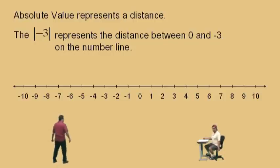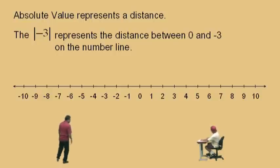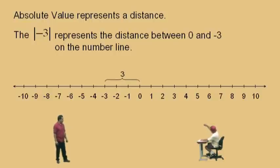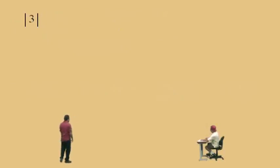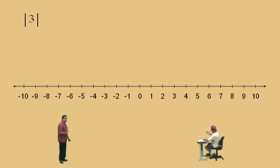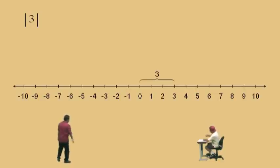Now, if we look at the number line here, Charlie, how far apart are negative 3 and 0 on the number line? What's the distance between them? 3. It is 3, and that would be your answer. So let's do this one — the absolute value of 3. How far apart is 3 and 0 on the number line? 3 units — so the absolute value of 3 is 3.